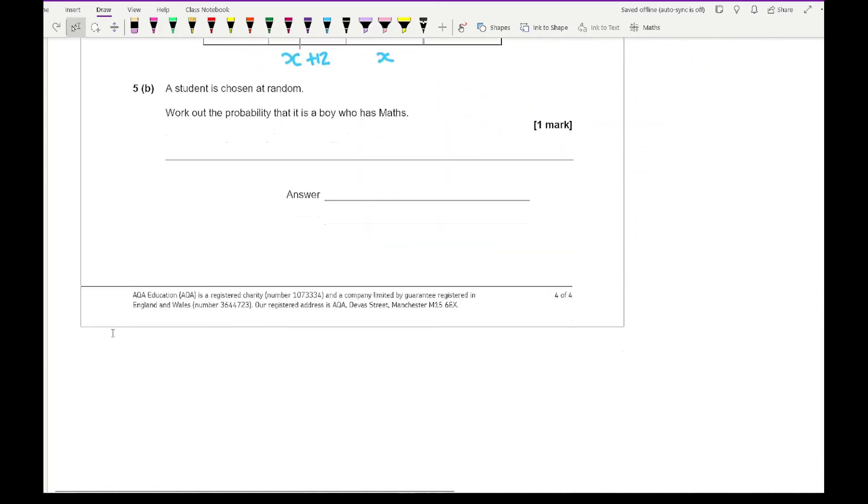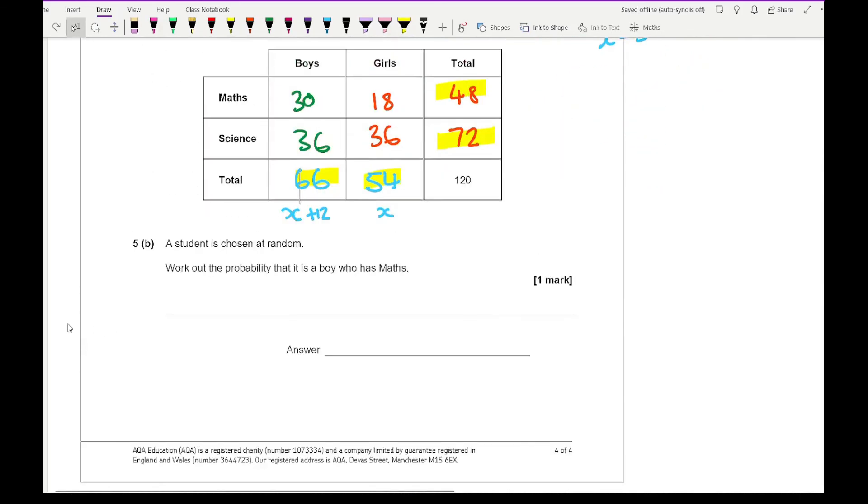Now question 5b says that a student is chosen at random. Work out the probability that it is a boy who has maths. Well, in terms of a boy that has maths, it's going to be 30 over 120, which we can simplify, which gives us 3 over 12, which gives us 1 over 4. And there is our final answer. And that concludes this basic probability topic test.